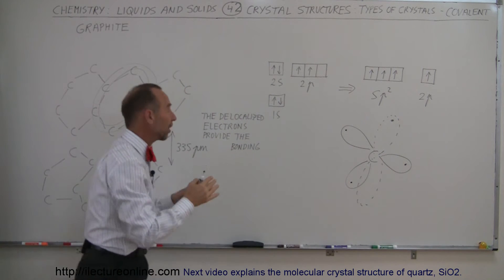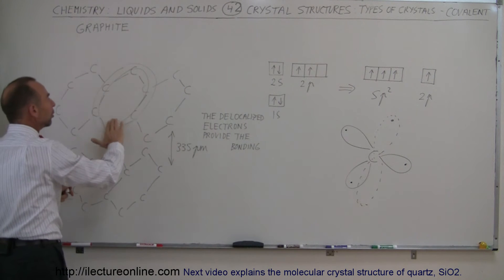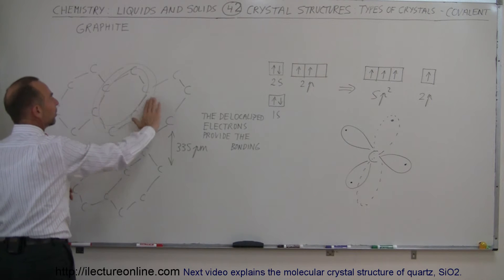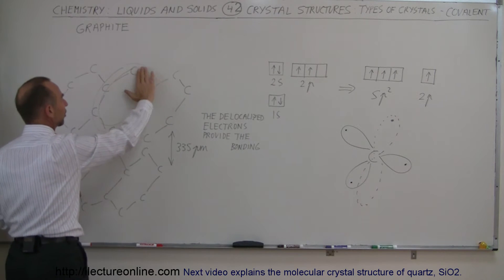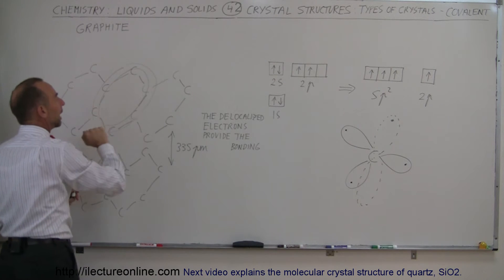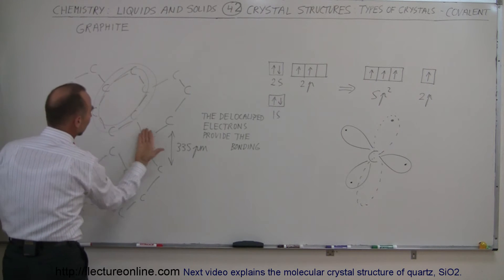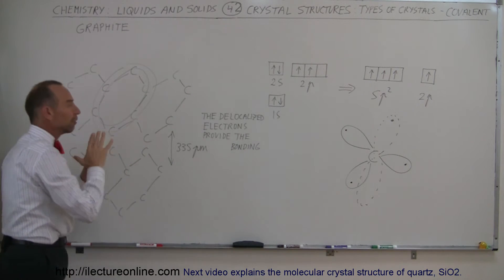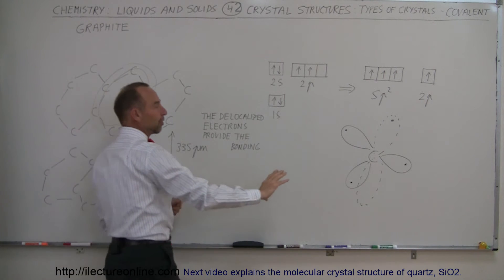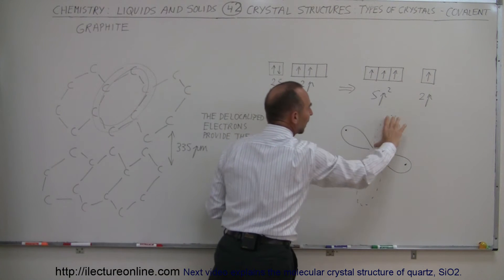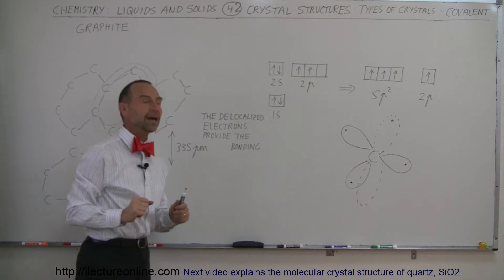And so that 2p orbital that also has a single electron in it will allow that electron then to exist above and below the plane and it turns out just like in a benzene ring these electrons are then shared equally among all the carbon atoms and it turns out there will be three electrons shared on the top side and three electrons shared on the bottom side and they came of course from each carbon atom contributing one of those 2p electrons.